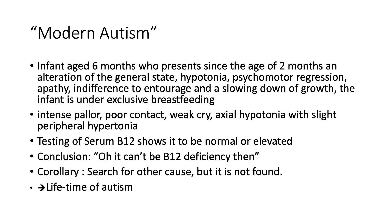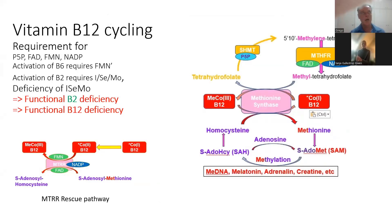The next thing I want to discuss is new-age autism — paradoxical B12 deficiency, where the serum B12 is high but largely inactive. The issue is that B12 cycling normally involves the introduction of folate somewhere in the cycle.